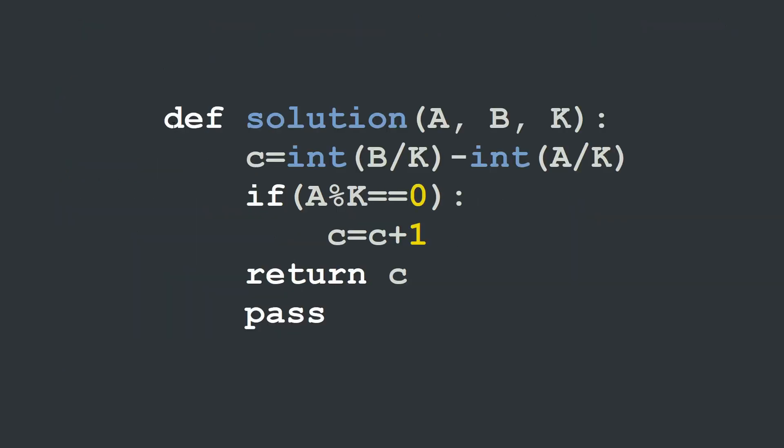In Python it's also the similar way, similar approach. This is our solution function. We have the three parameters A, B and K. Then we define our C variable which will hold B over K minus A over K. Notice here that we've added the integer cast because we don't want Python to take these as floating results. We need those as integers because remember these represent the number of divisibles between 0 and B. So that's the main difference here between the Python solution and the C++ solution. Then we're going to test our edge case. If A modulus K is equal to 0 then I'm going to increment my counter C equals C plus 1. And at the end we're going to return C as a result.